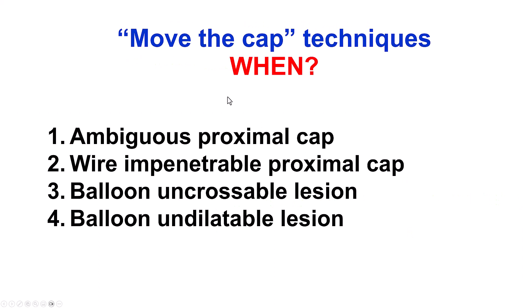When should those techniques be used? There are four indications. The first is when there is an ambiguous proximal cap — when we don't clearly understand where the CTO is starting, it is advantageous to start a dissection proximally and use the extra-plaque space to remain within the vessel architecture. The second is for wire-impenetrable proximal caps, when the cap is so calcified that it cannot be penetrated with a guide wire.